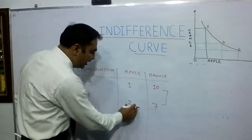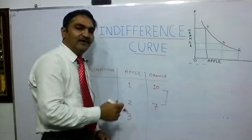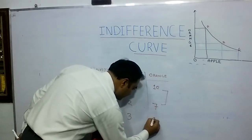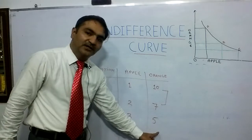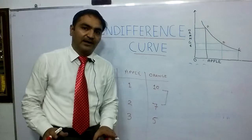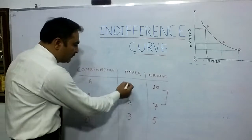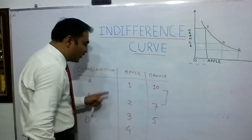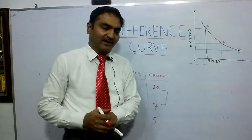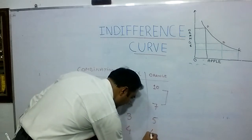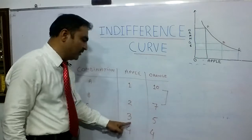Now I move to combination C. In combination C, I want one more apple — I want to gain the third apple. To get the third apple, I have to sacrifice some more oranges. Now I have 3 apples and 5 oranges — and here the consumer also gets equal satisfaction. Next is combination D, where the consumer wants to gain one more apple. To gain that apple, he again has to sacrifice oranges, leaving him with 4 oranges. So: combination A — 1 apple, 10 oranges; B — 2 apples, 7 oranges; C — 3 apples, 5 oranges; D — 4 apples, 4 oranges.